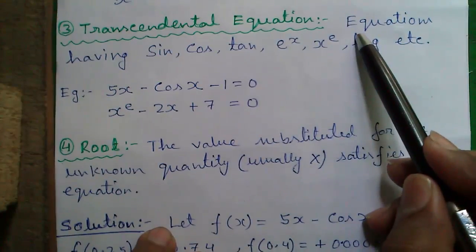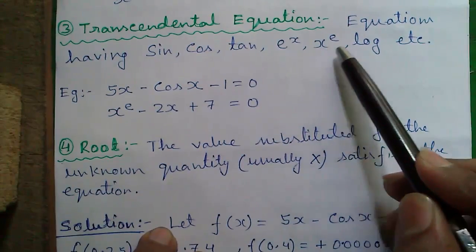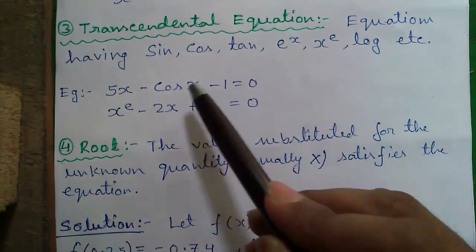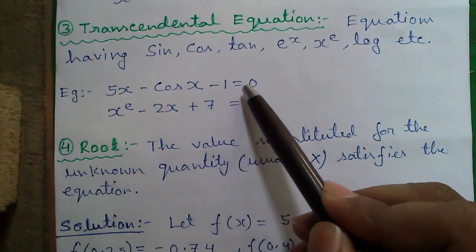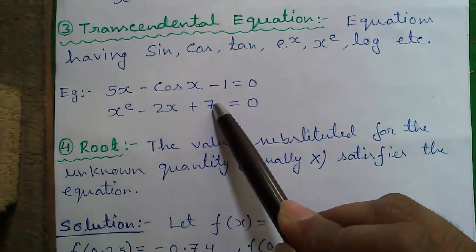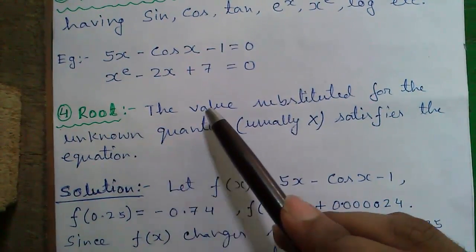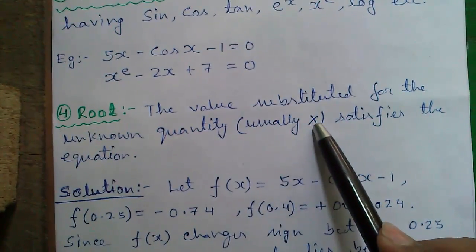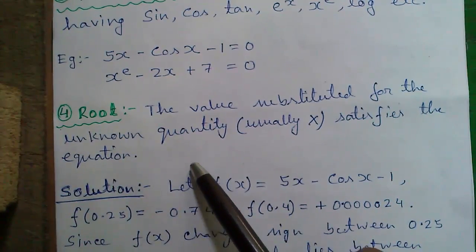Next is transcendental equations. Equations having sine, cos, tan, e to the power x, x to the power e, log, etc. are called transcendental equations. For example, 5x minus cos x minus 1 equals to 0. And x to the power e minus 2x plus 7 equals to 0. Next is root. The value substituted for the unknown quantity, usually the x, satisfied the equation. I will explain what is the meaning of root at the end of this video.